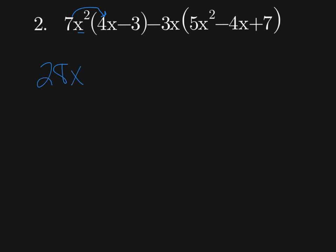And then I have x to the second times x, which is x to the third. Remember, this is multiplication, so we add exponents. Now I have 7x squared times a negative 3, which is negative 21x to the second.